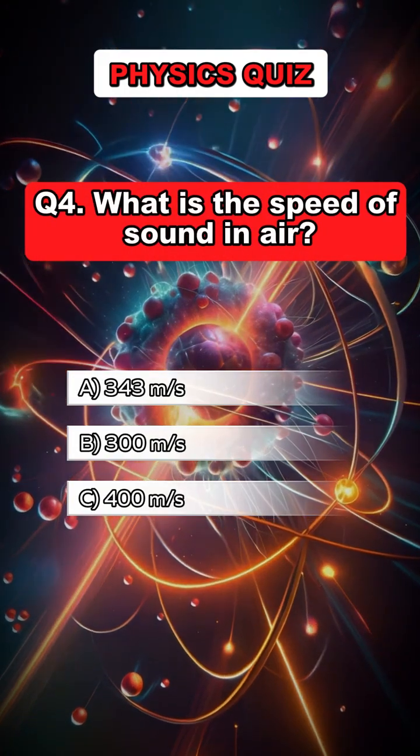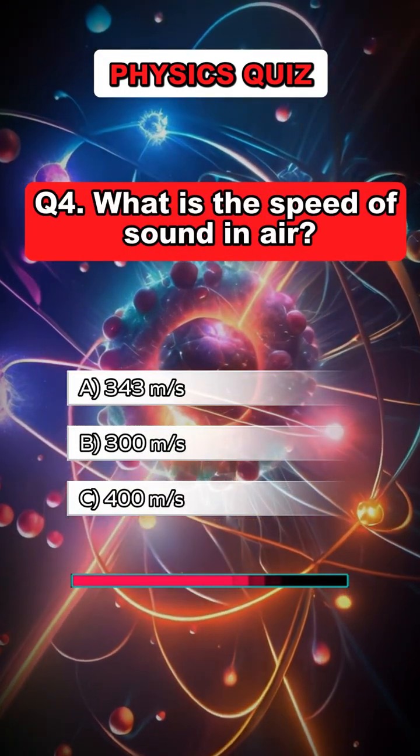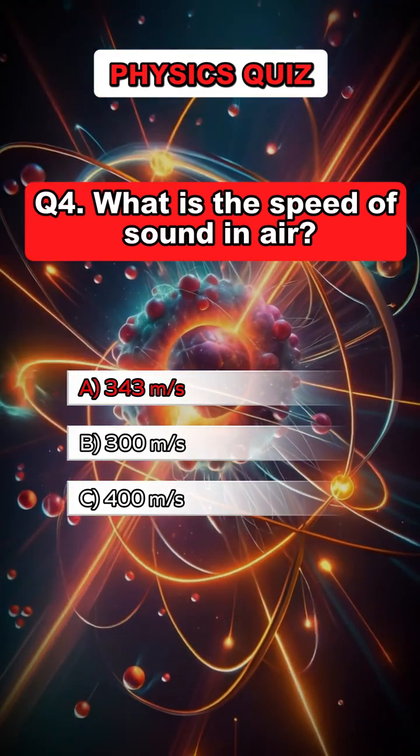Question 4. What is the speed of sound in air? Answer A. 343 meters per second.